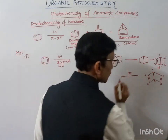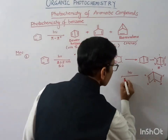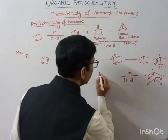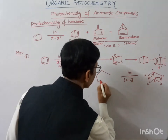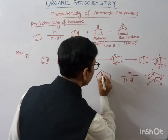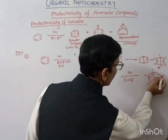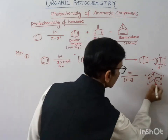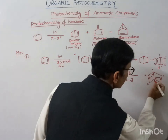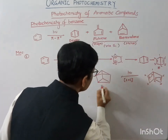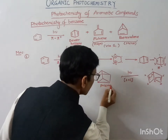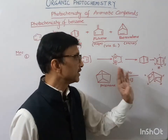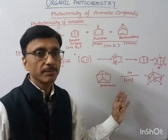In the presence of light, Dewar benzene may also undergo a 2+2 cycloaddition reaction, and we will get a prismane-type intermediate. A new bond forms between carbons two and six, and another bond between carbons three and five. This is called prismane, and this is the prismane-type intermediate formed from Dewar benzene.